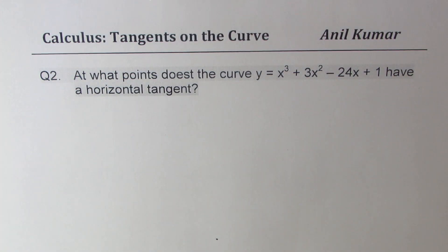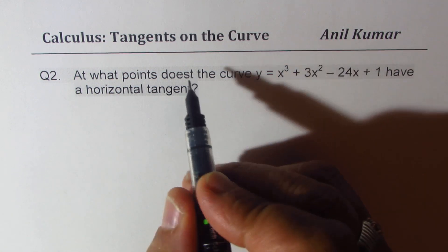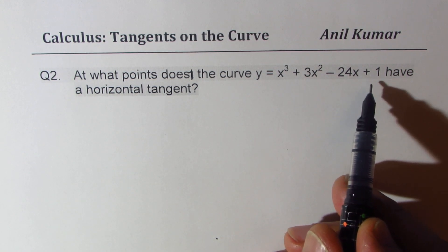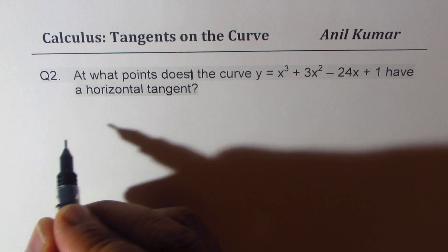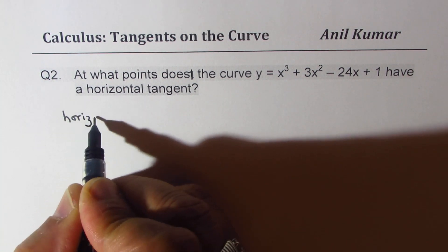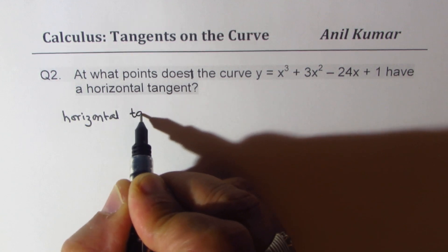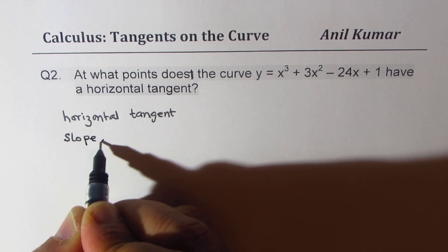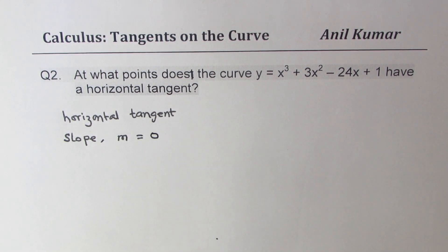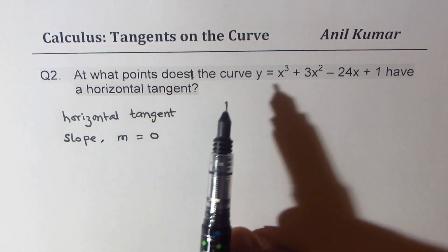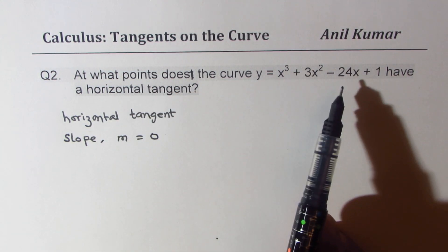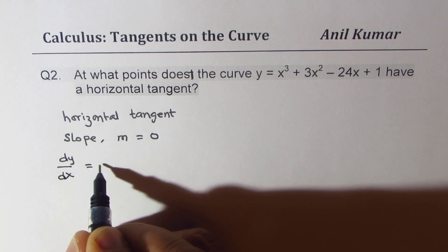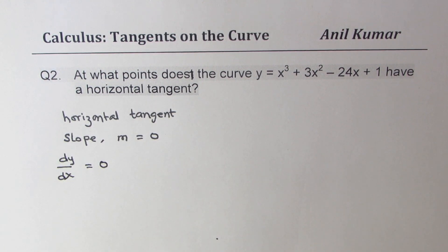Here is the solution of question number 2. At what point does the curve y equals to x cubed plus 3x squared minus 24x plus 1 have a horizontal tangent? A horizontal tangent line means that the slope m will be equal to 0. So we have to find points on this curve where dy/dx is equal to 0.